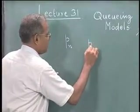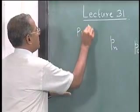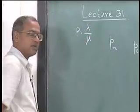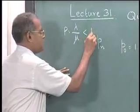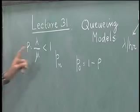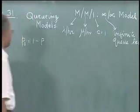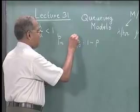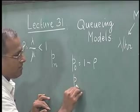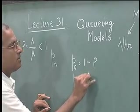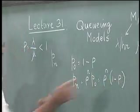We derived P0 is equal to 1 minus rho, where rho is equal to lambda by mu. We also indicated that lambda by mu should be less than 1, so rho should be less than 1, particularly when we have infinite queue length. The most important equations we derived are P0 equal to 1 minus rho, and PN equal to rho to the power n times P0, which is rho to the power n into 1 minus rho.